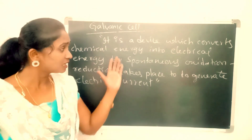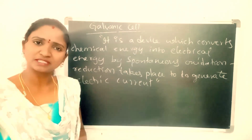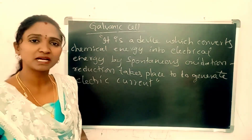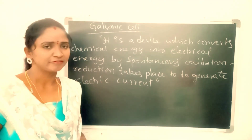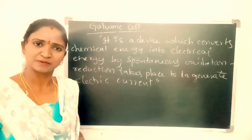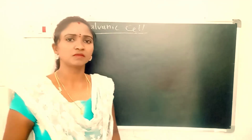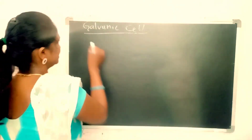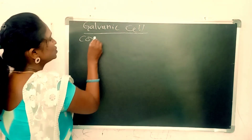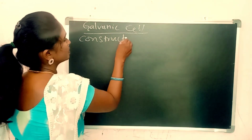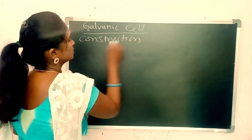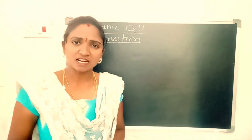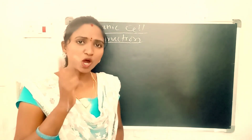Now see the construction and working of galvanic cell — how it will be constructed and how it works. Galvanic cell contains two half cells. One half cell represents oxidation and another half cell represents reduction reactions.